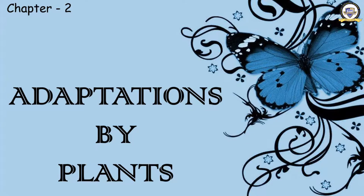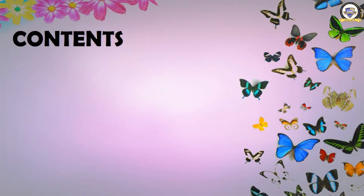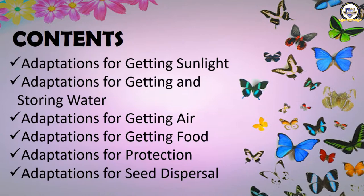The plants change themselves according to the situation — that is known as adaptation. This is part one of the chapter. We will learn six topics: adaptations for getting sunlight, for getting and storing water, for getting air, for getting food, for protection, and for seed dispersal.